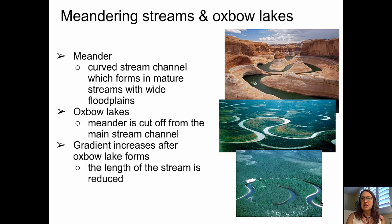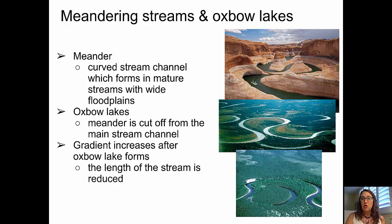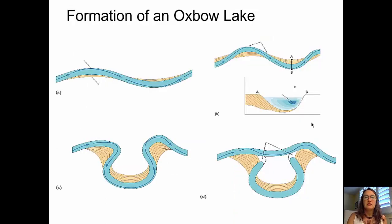We've talked about streams meandering and how meanders are enlarged through erosion. The next feature is an oxbow lake. An oxbow lake is a meander that is cut off from the main stream channel. Interestingly, the gradient of the stream increases after the oxbow lake is formed, because the length of the stream channel is actually reduced. Here we have a picture of some meanders, and in the bottom two pictures, we can see broadly meandering streams with U-shaped oxbow lakes off to the side.